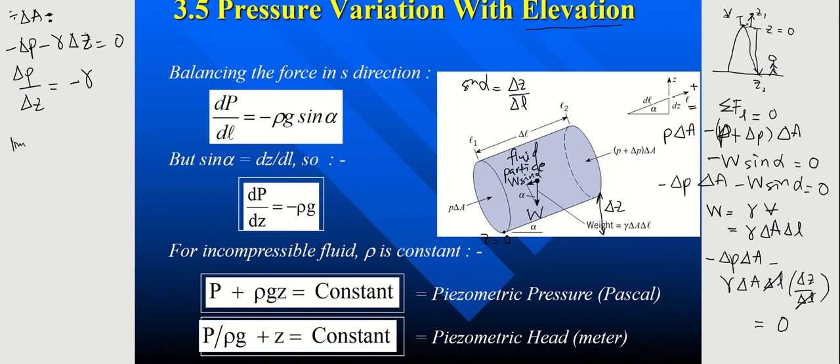Set the limit of delta Z approaching 0. Therefore, I get dP/dZ equals to negative gamma. Or you can also replace with negative rho G. So this statement shows that any change in the elevation delta Z will cause a change in pressure delta P provided that the density is constant.